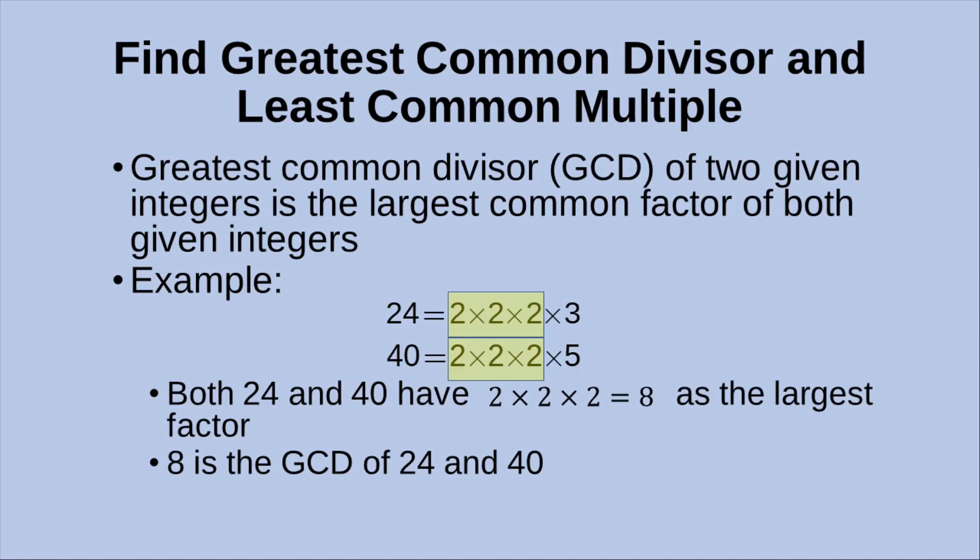Hello everybody, welcome to the Python math project section. In this video, I'm going to tell you the ways to find out the greatest common divisor as well as the least common multiple. So what is the greatest common divisor? It is simply the largest common factor of two given numbers.